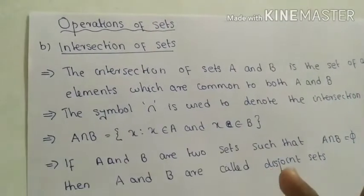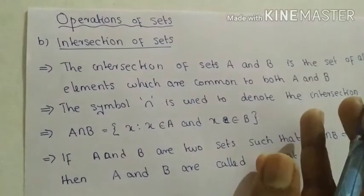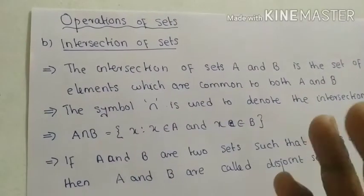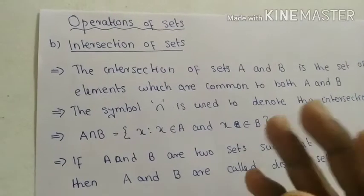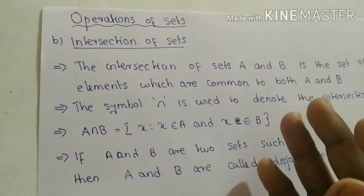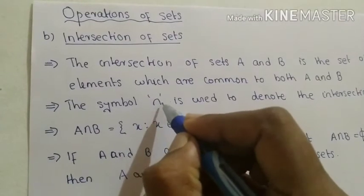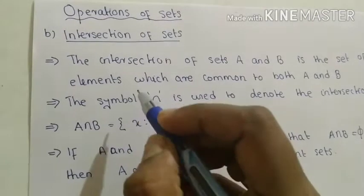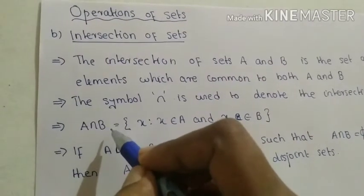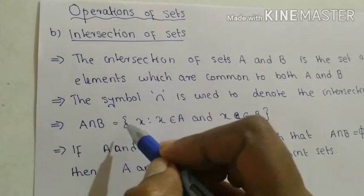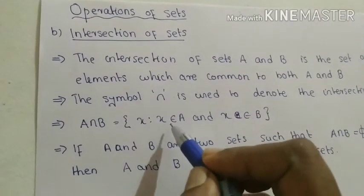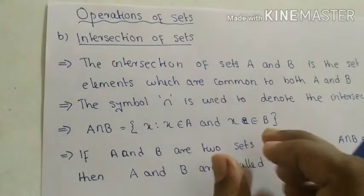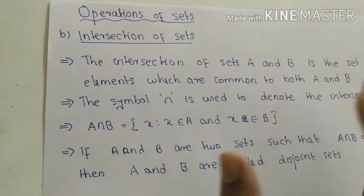The intersection of set A and B is a set of all elements which are common to both set A and B, or a set of all those elements which belong to both A and B. This symbol is used to denote the intersection. In set builder form, A intersection B is the set of all x such that x is an element of A and x is an element of B.